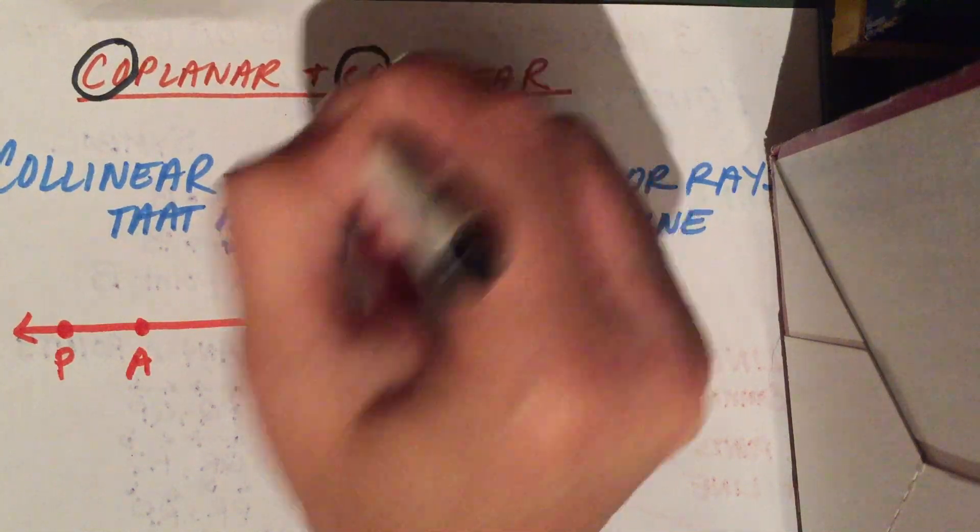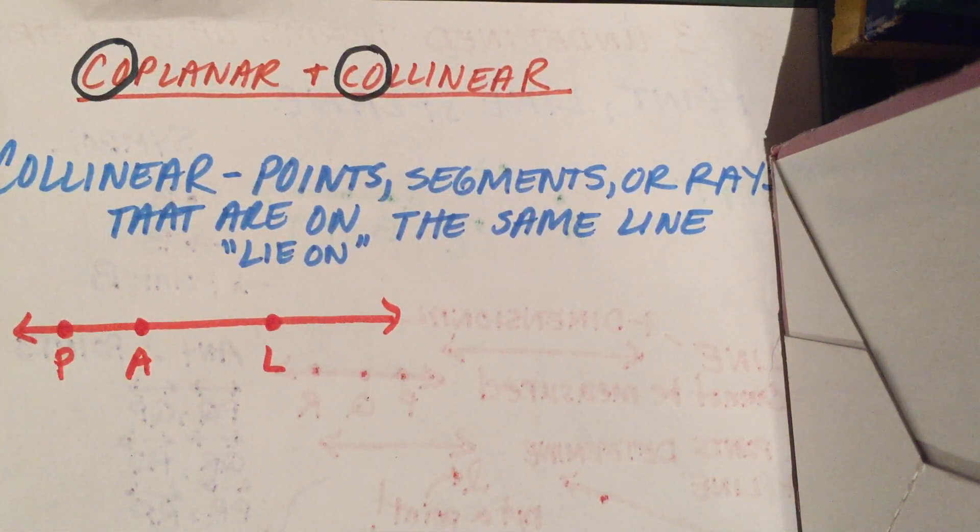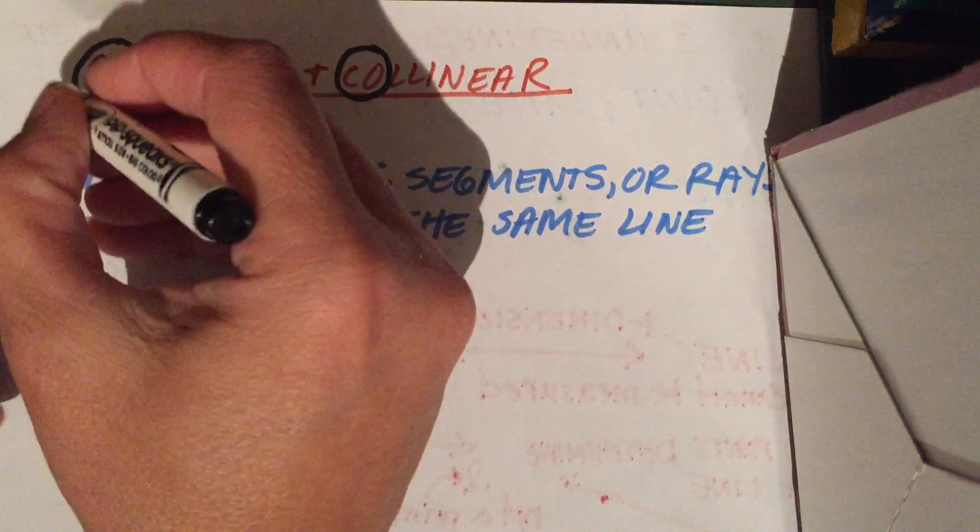You see the word 'co.' Where have you seen the word 'co' before? Coworker, cooperate, coordinate, co-champions, correspond. Co means to work together. So co basically means together.